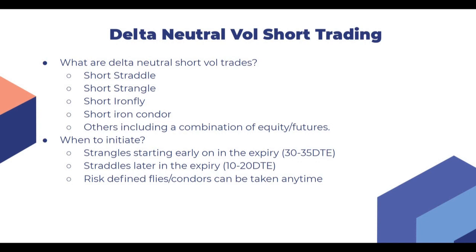When to initiate: strangles and straddles are something we can do any time, but what I usually do is early in the expiry - around 30 to 35 days to expiry - I initiate strangles, and later in the expiry I initiate straddles. The ATM option's theta decay is faster in the later half of the expiry, which is why I try to do straddles slightly later as compared to strangles. Risk-defined flies and condors can be taken any time depending on one's view.